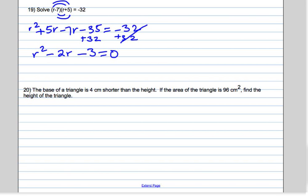Now we need two numbers that multiply to negative 3 and add to negative 2. Those numbers are negative 3 and positive 1, so we're going to rewrite the negative 2r as minus 3r plus 1r.